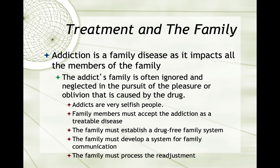Addiction is a family disease, as it impacts all the members of the family. The addict's family is often ignored and neglected in the pursuit of the pleasure or oblivion caused by the drug. Addicts are very selfish people. Family members must accept the addiction as a treatable disease, establish a drug-free family system, develop a system for family communication, and process the readjustment. If the individual has been an addict known to the family, one thing they have been doing is enabling. The family has developed around this addiction — alcoholism, smoking, or whatever — and they have developed means of coping with the person's problem.